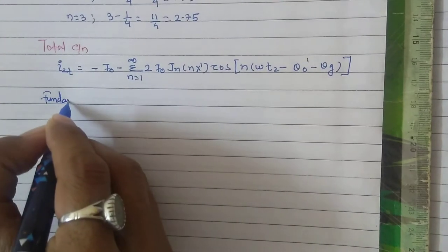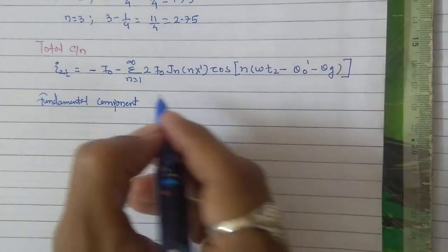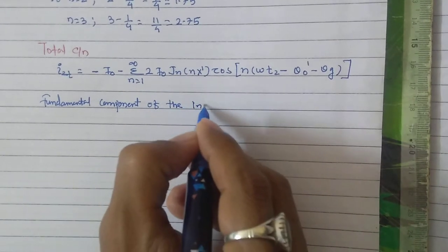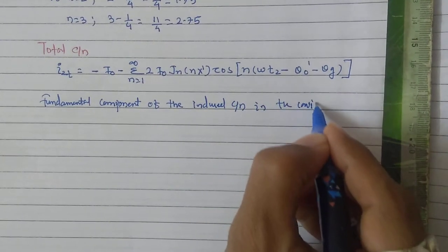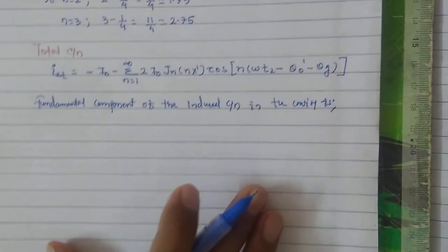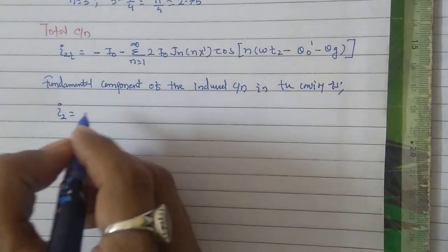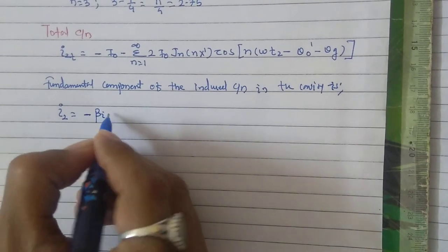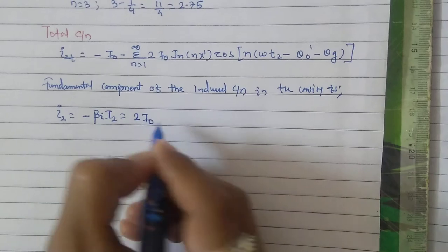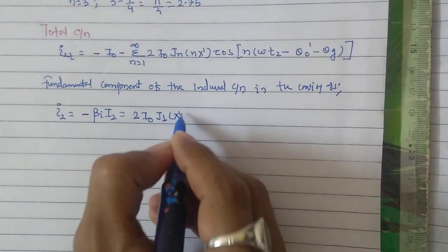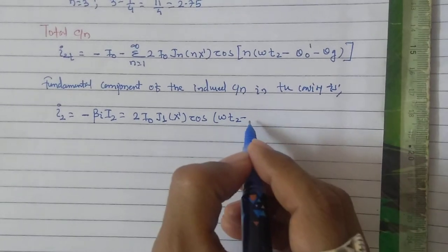This expression has a DC component and a fundamental component at n=1, plus harmonics at n=2,3,4 and so on. We know the maximum current is induced because of the fundamental component only. So the fundamental component of the current induced in the cavity, including the beam coupling coefficient beta_i, is: i2 = 2 i0 beta_i J1(x dash) cos(omega t2 minus theta0 dash).